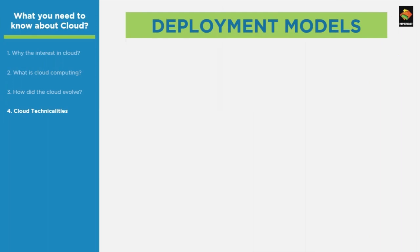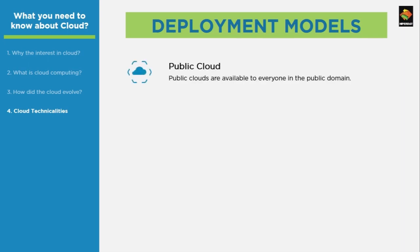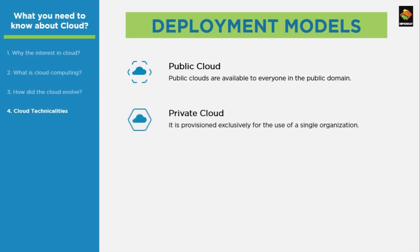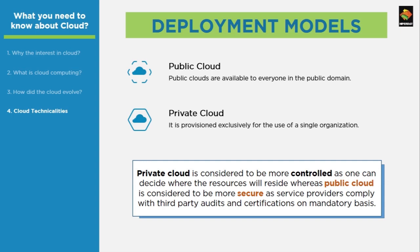Cloud services can be deployed in several ways depending on requirement. Cloud deployment models are categorized on the basis of location, ownership, management, and operation of the infrastructure. Public cloud is available to everyone in the public domain — data is created and stored on the cloud provider's infrastructure. In the private cloud model, the infrastructure is provisioned exclusively for one organization, managed and owned either by the business or the provider. Generally, private cloud is considered more controlled, while public cloud tends to be more secure as providers are subjected to more third-party audits and certifications.